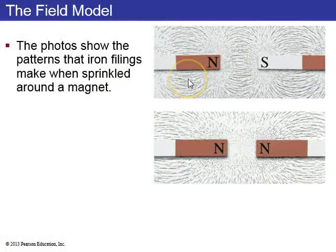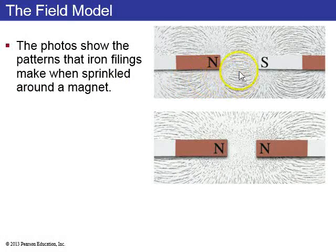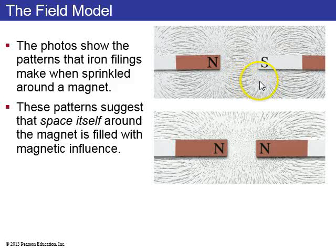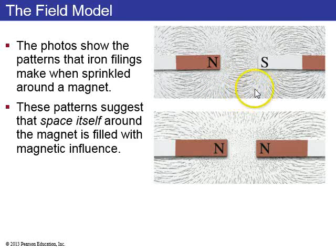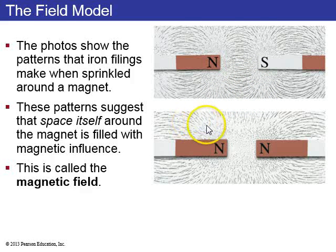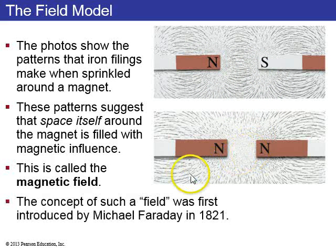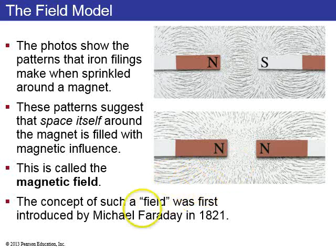So this is called the field model. And these patterns around magnets is another way of showing fields. So here we have little iron filings that when you sprinkle it around a magnet, it shows the magnetic influence, which we call the magnetic field. The field points away from N and points towards S. And the concept of fields was introduced first by Michael Faraday in 1821.